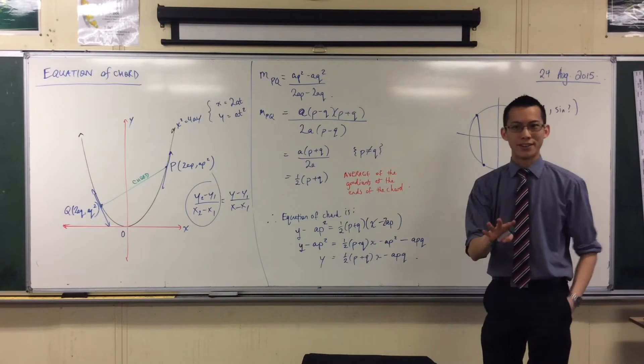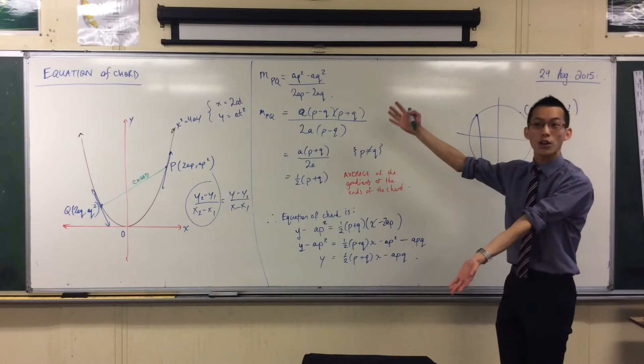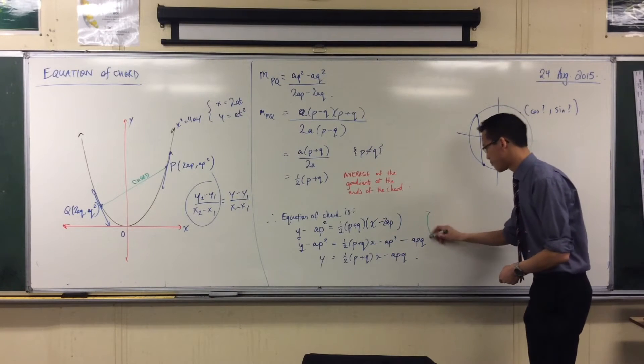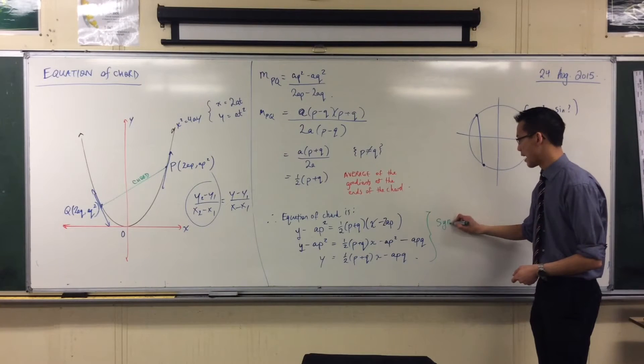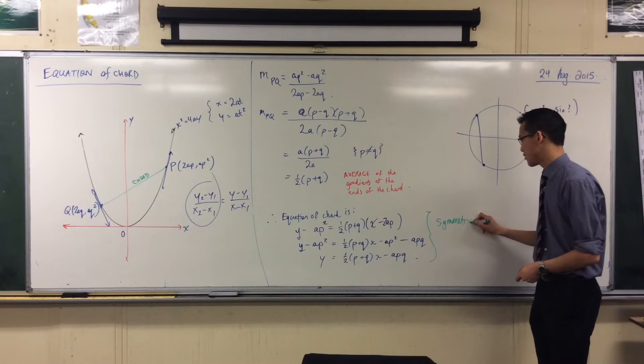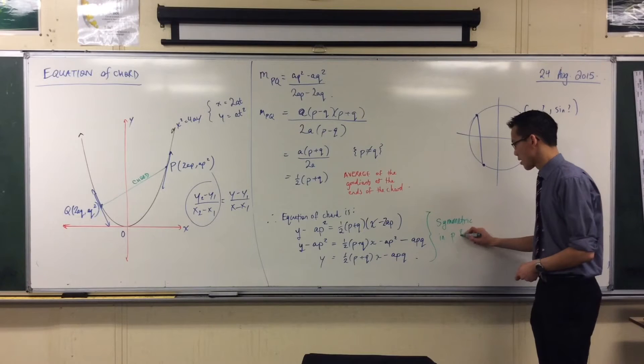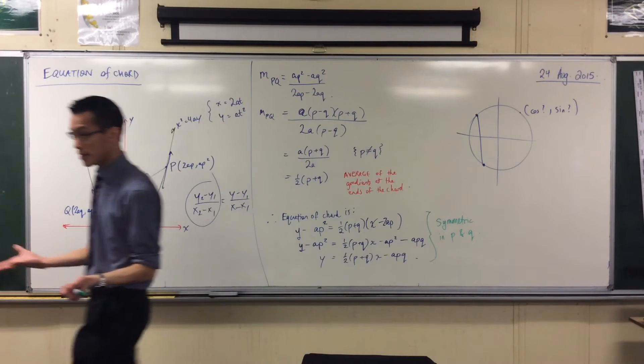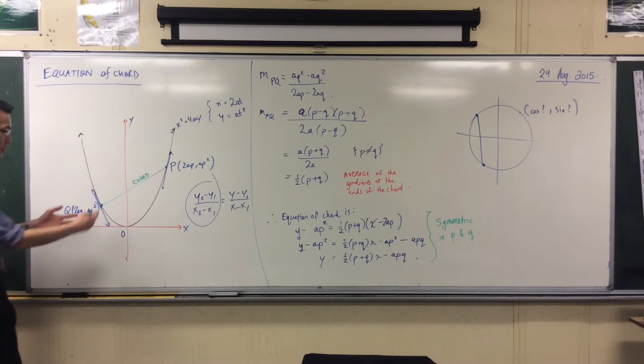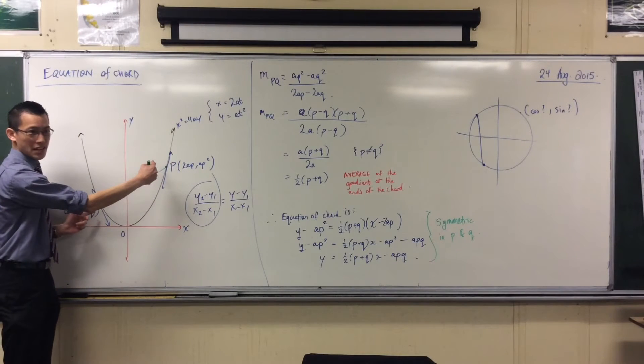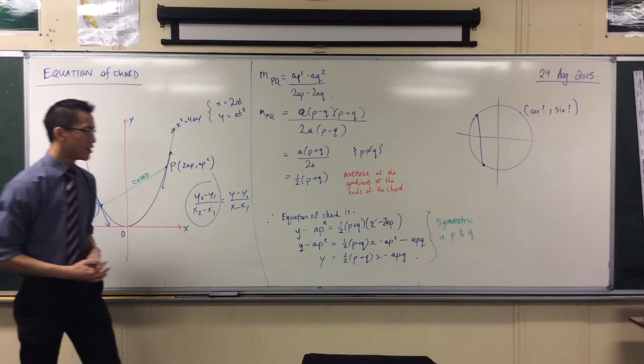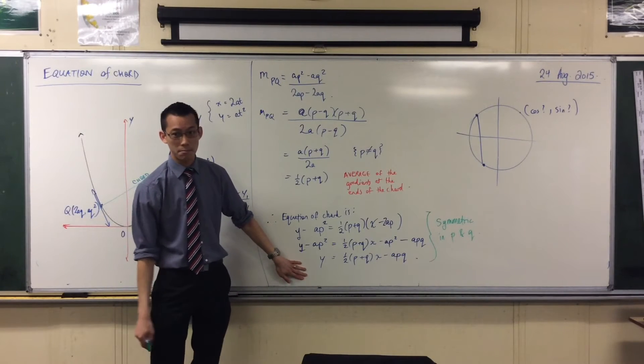Now, it's just worth noting the fact that you could put in p or q, p or q, and you will get the same thing at the other end. This has a little name, this is called symmetric in whichever variables you put in. Because a chord pq is the same as the chord qp, it's the same line.